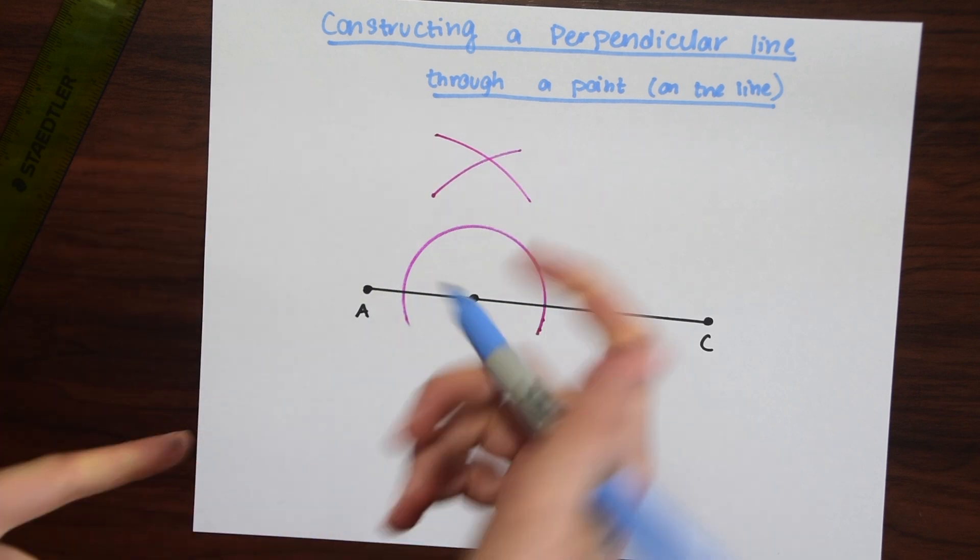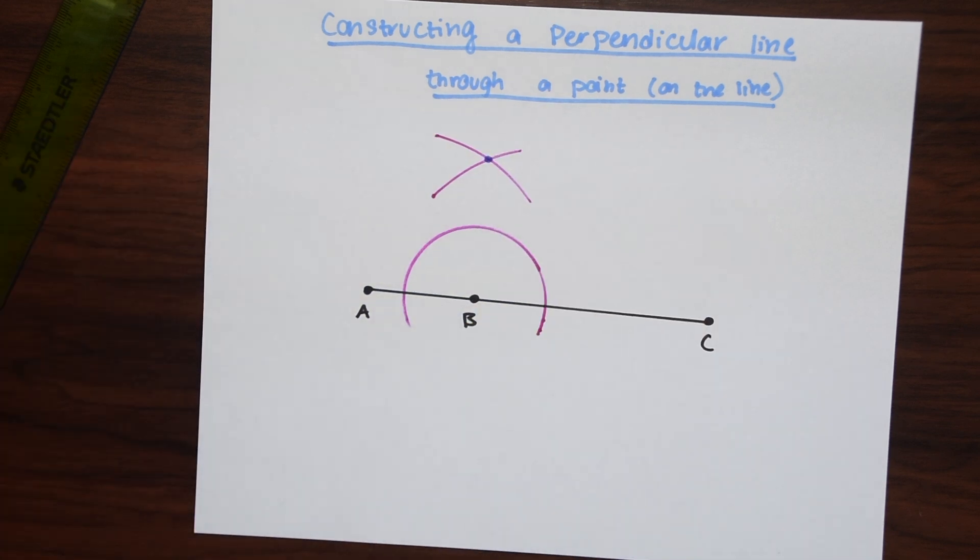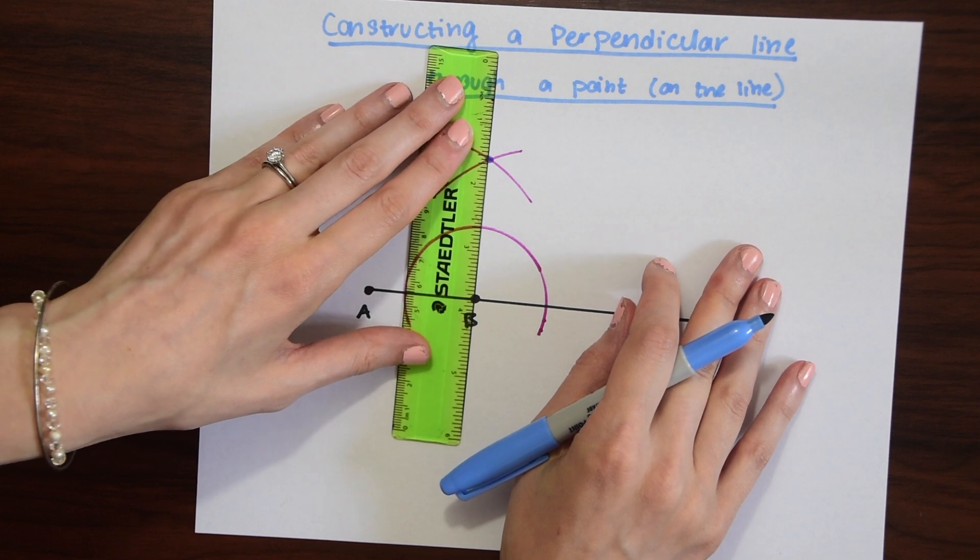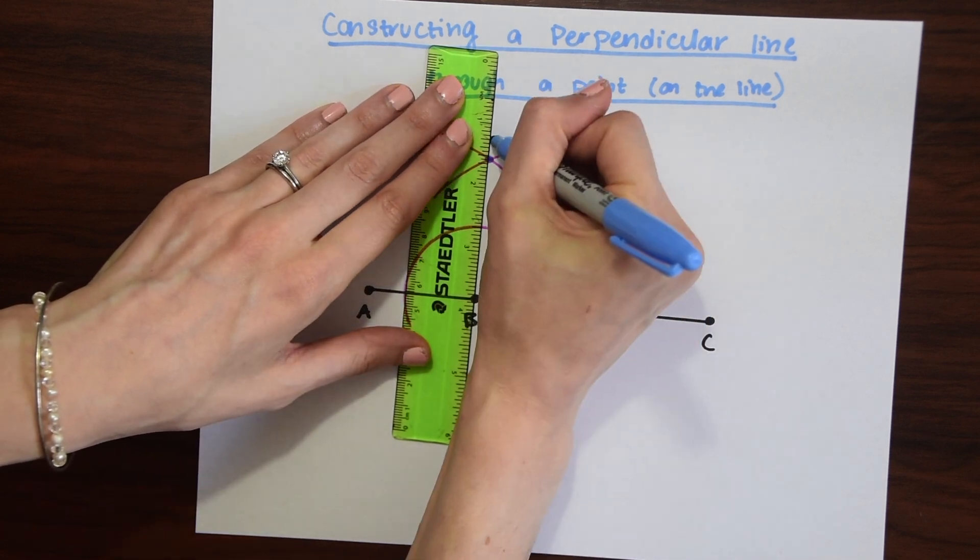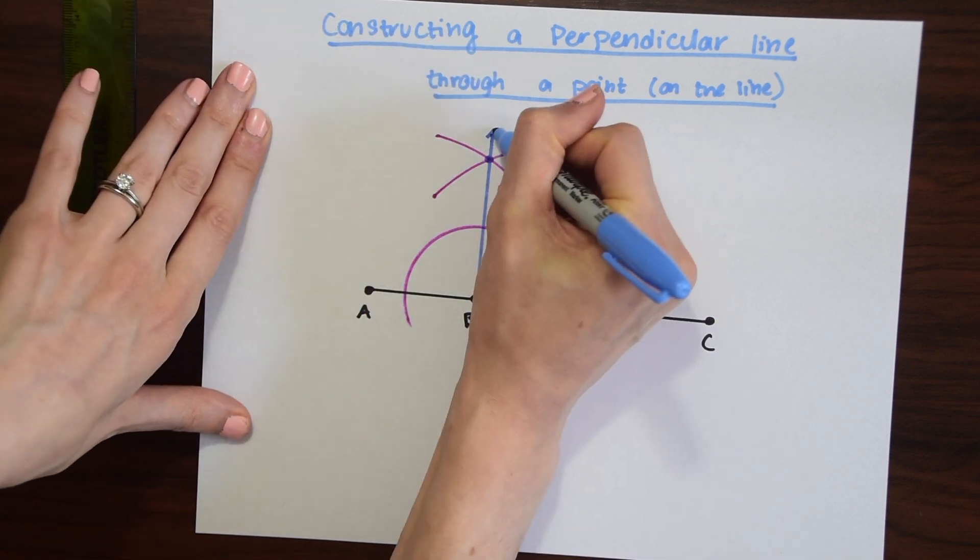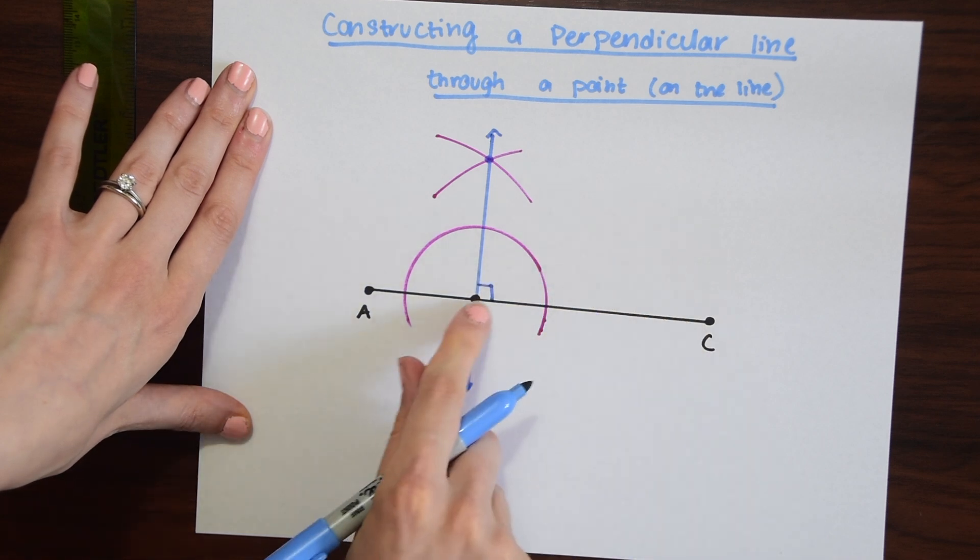So notice that we made a point of intersection up here, so I'm going to mark that with a point and now all we need to do is take our ruler or straight edge and line it up with point B and draw our line. And notice we made our perpendicular line so this is equal to 90 degrees.